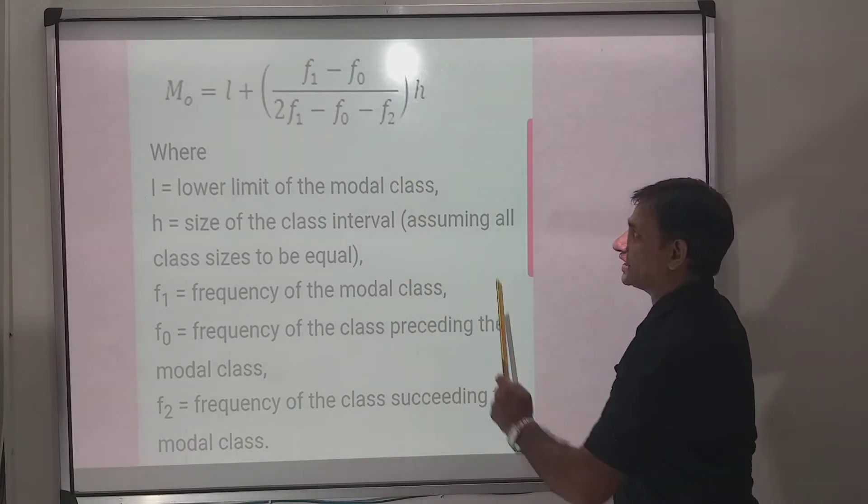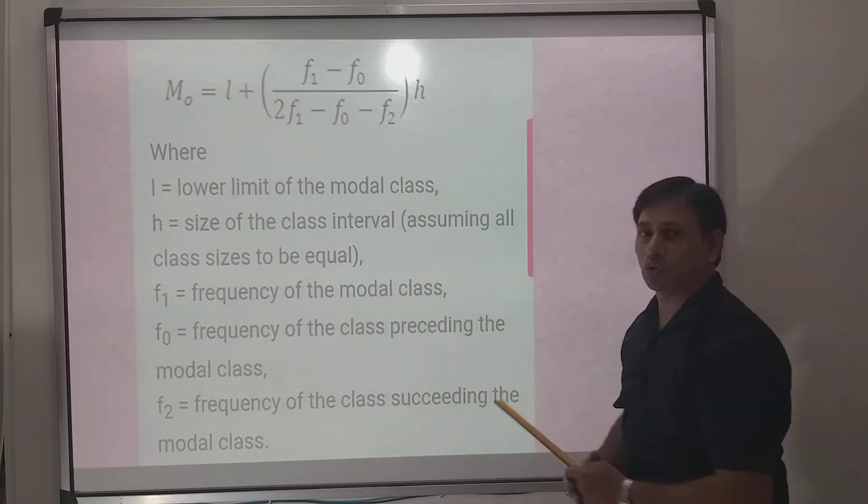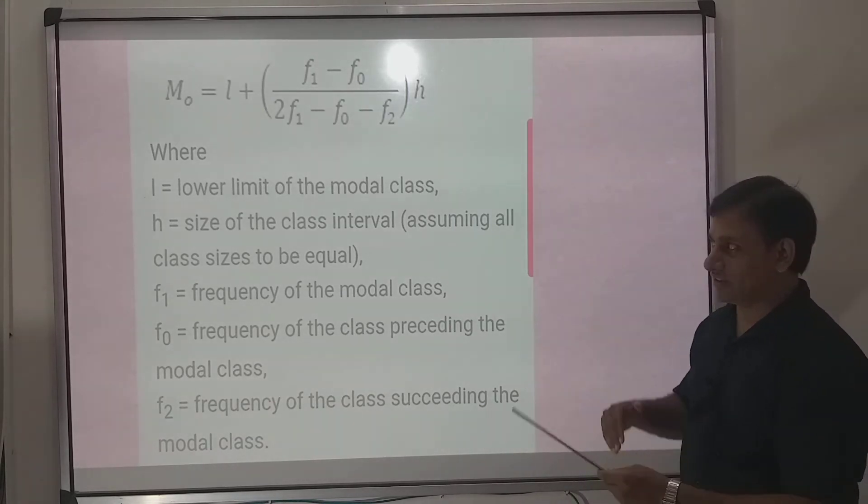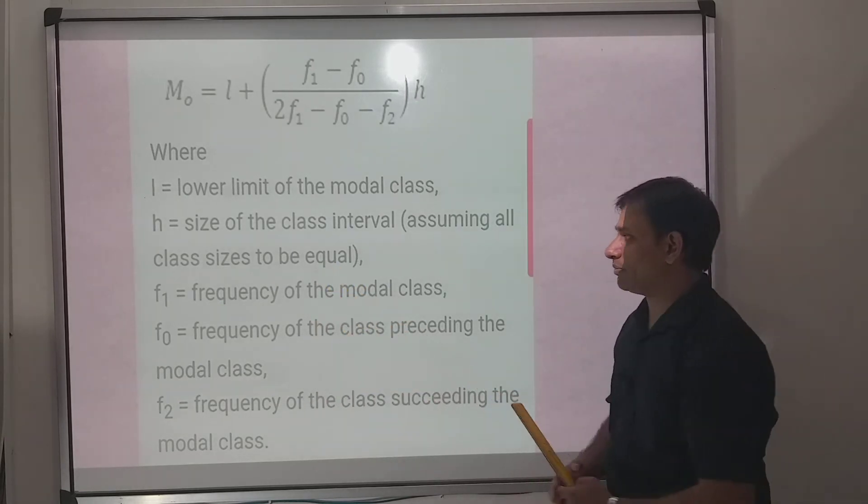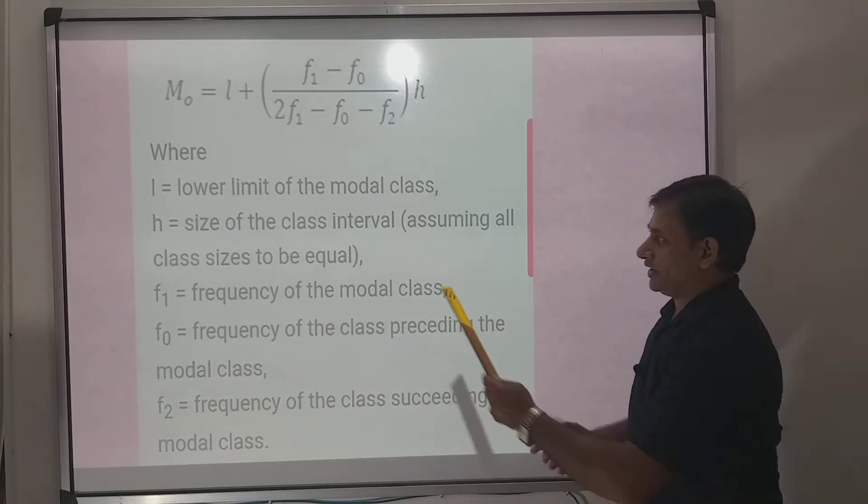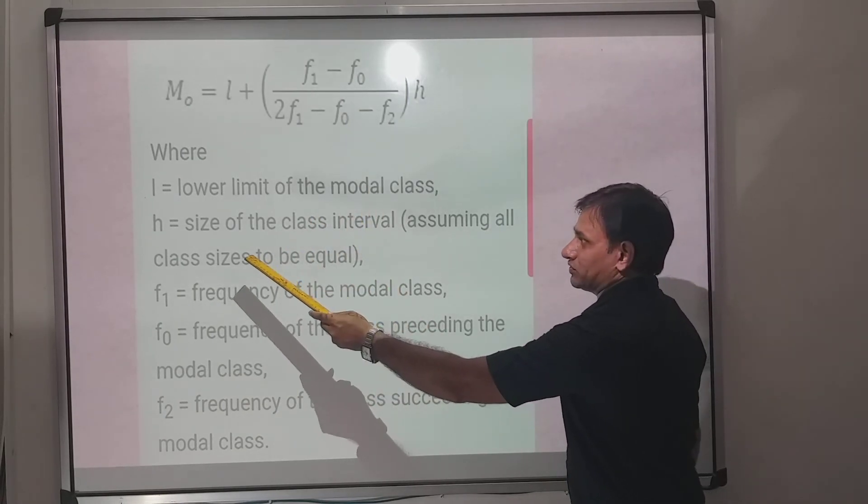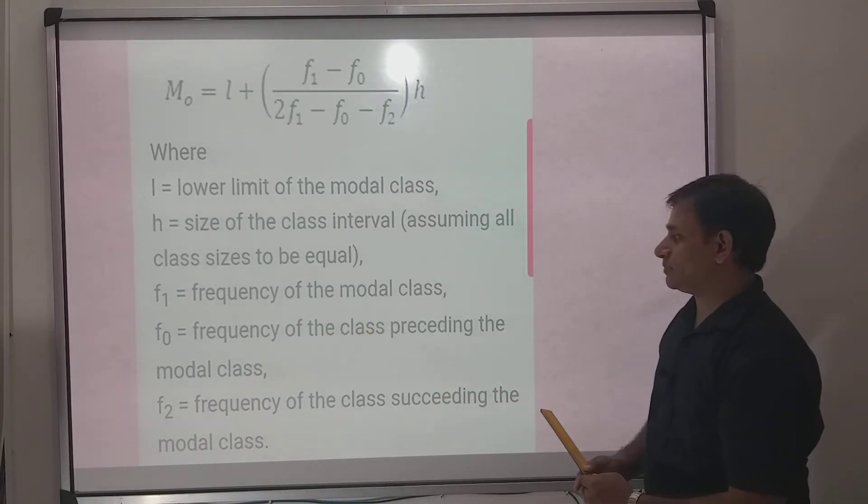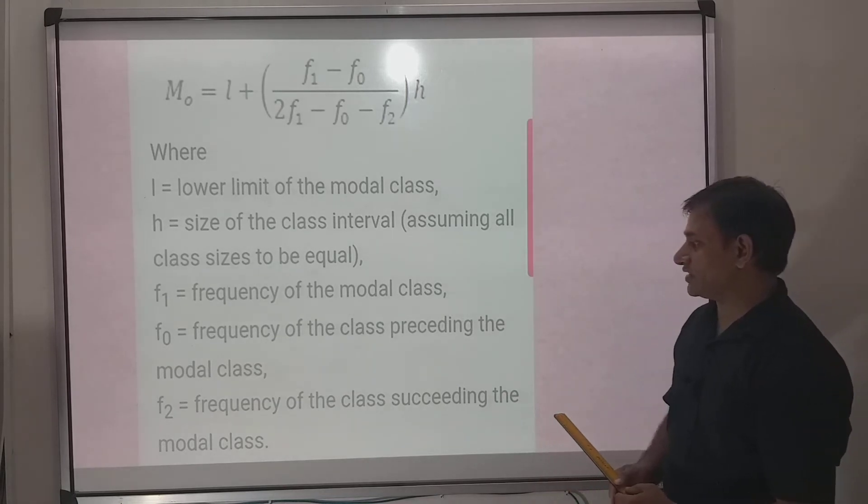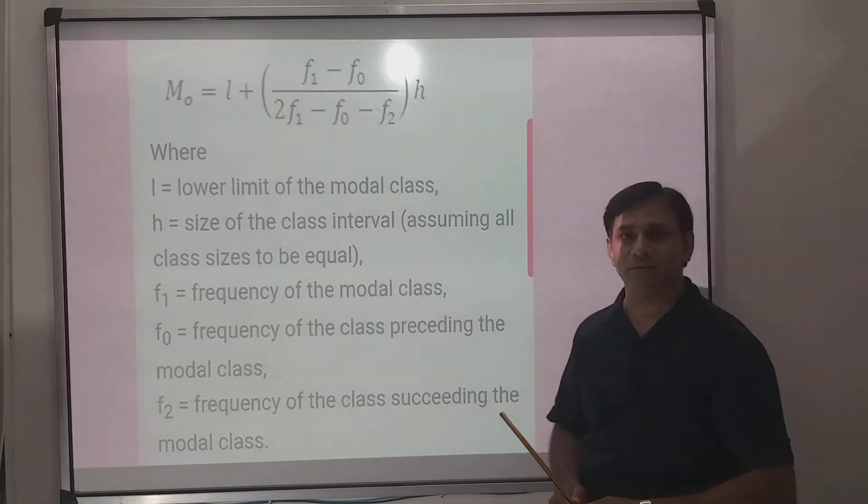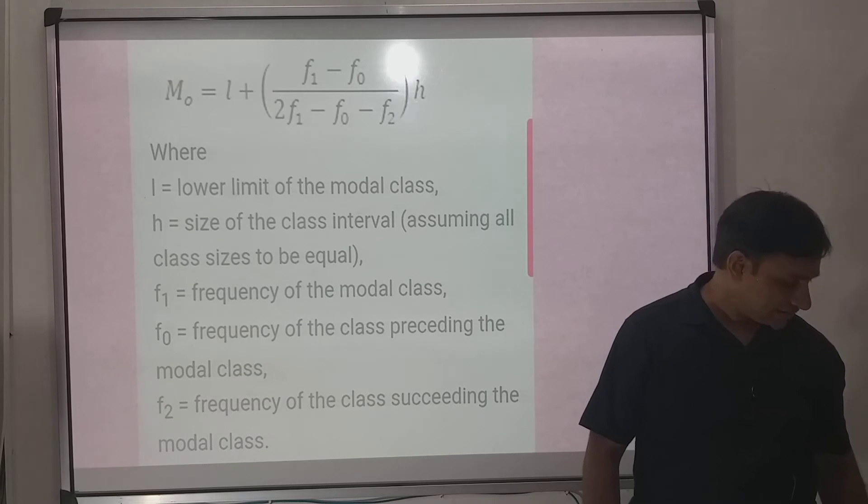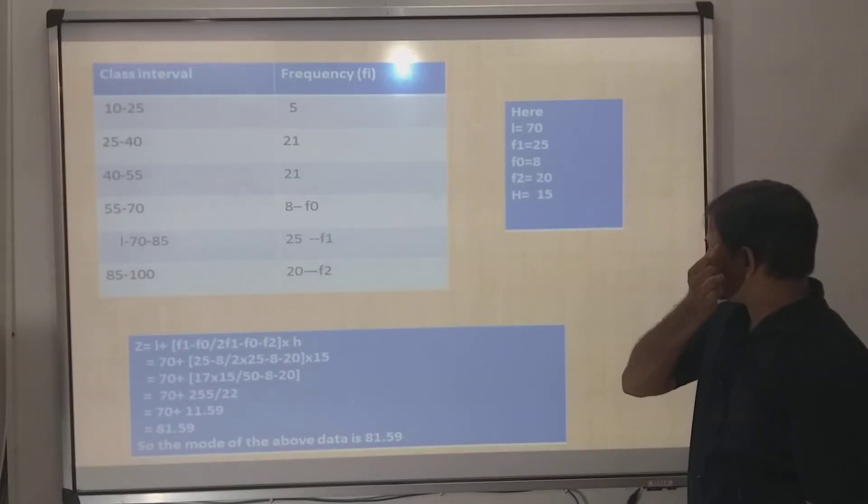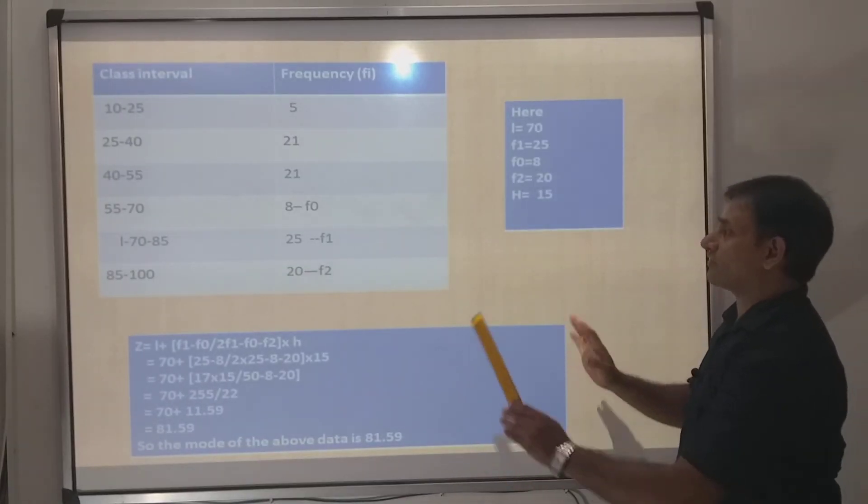Now let us put this formula into consideration. Once again, have a look at the formula. You have to remember it - this is for grouped data. Questions can be asked: what is f1, what is f0, what is f2? This sort of questions can be asked in one mark MCQs or true/false. You have to remember it. l is lower limit of the modal class, h is the size of the class, f1 is frequency of the modal class, f0 is frequency of the class preceding, and f2 is the frequency of the class succeeding the modal class.